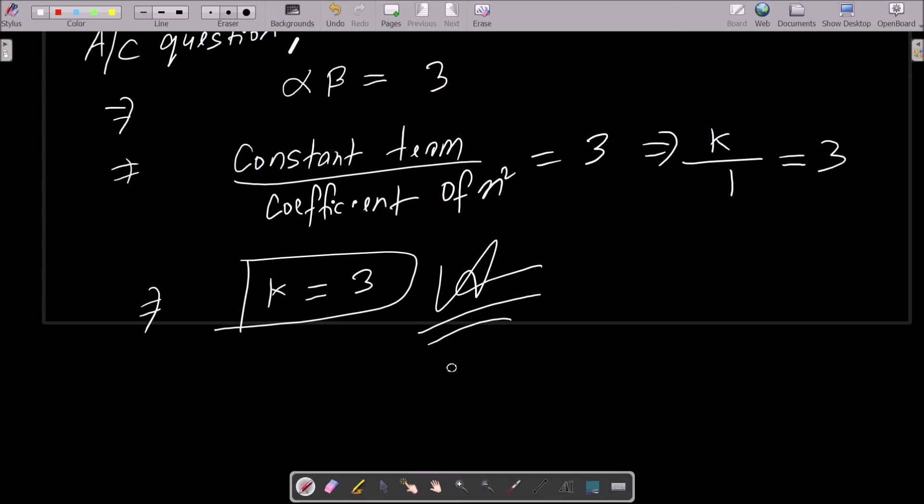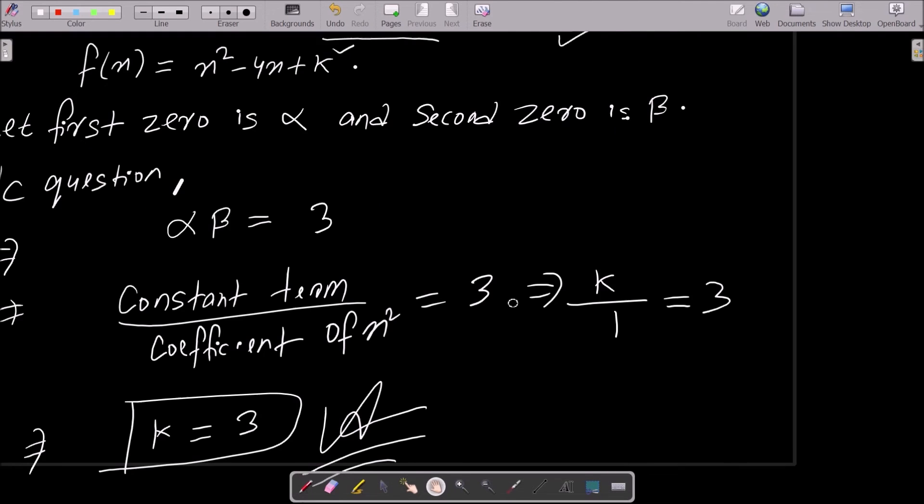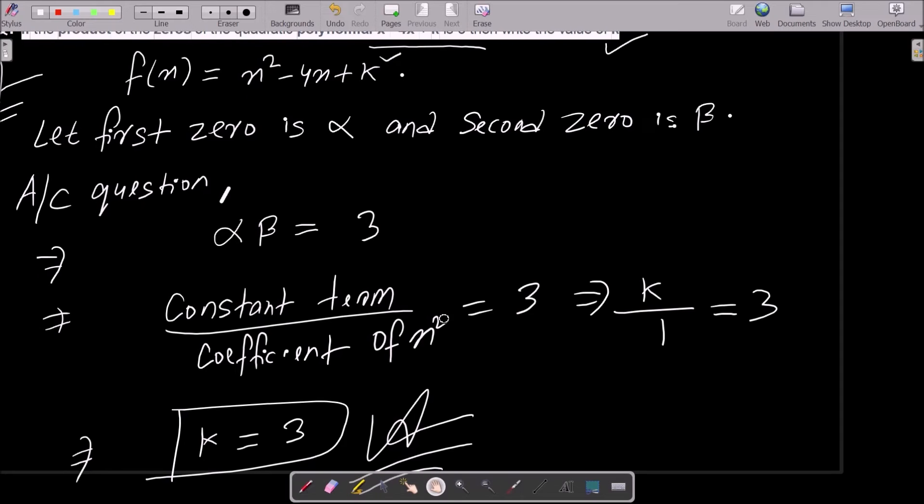This is the answer. Alternatively, in some books α × β = c/a. For this polynomial x² - 4x + k, you need to compare it with the general form of a quadratic equation ax² + bx + c.